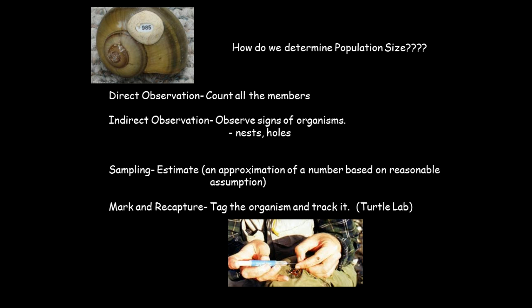So four different methods to determine population size: direct observation, probably the easiest of them all; indirect observation, where you're looking for signs of the organism like nests and holes; sampling, where you take a certain area and try to approximate how many of the organism are found; and mark and recapture, where you actually capture the organism, put some type of tracking device on it, and then set it back free.